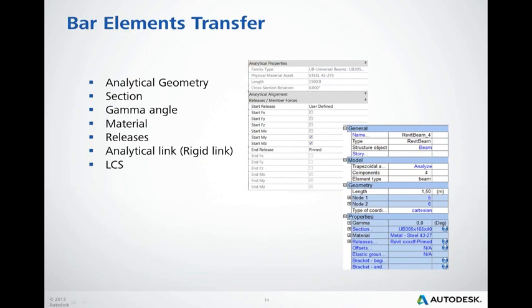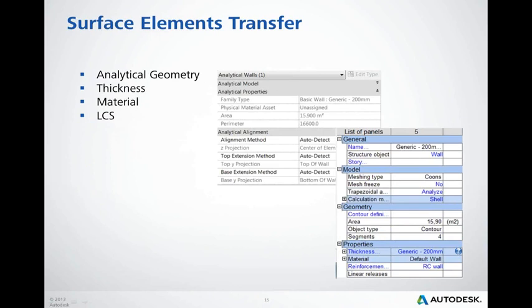Here is the list of bar properties exchanged between programs: geometry, section, rotation angle, material, releases, rigid links, and the local coordinate system of bars. The list of wall, slab, and floor properties exchanged includes: geometry, thickness, material, and local coordinate system.